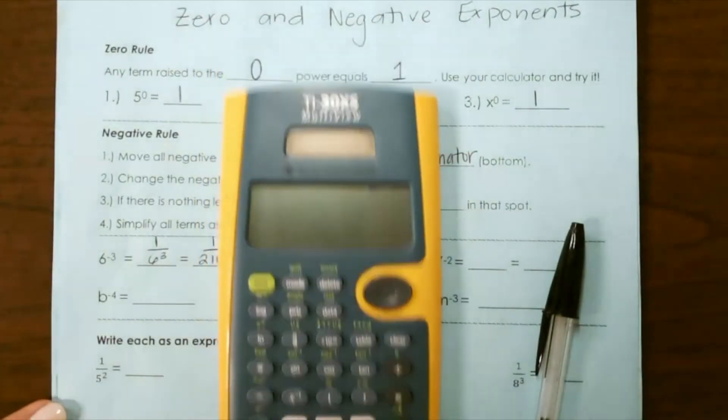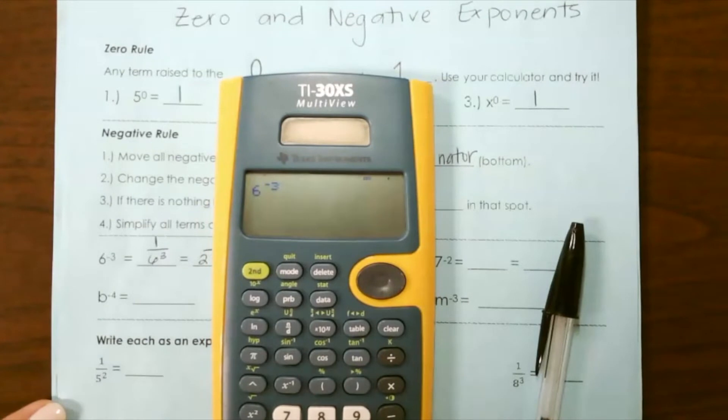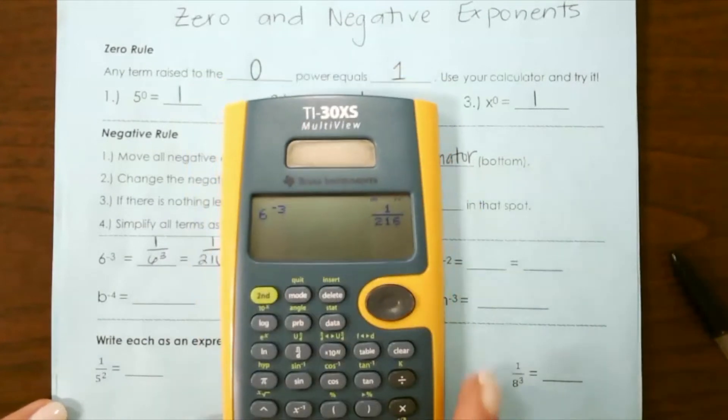To show this with our calculator, if we do 6 to the negative third power, it shows us that we get 1 over 216.